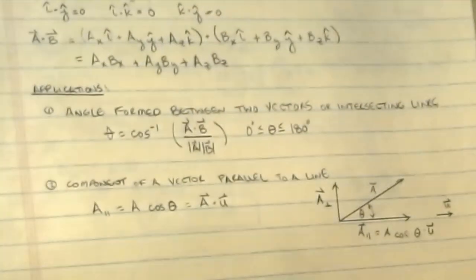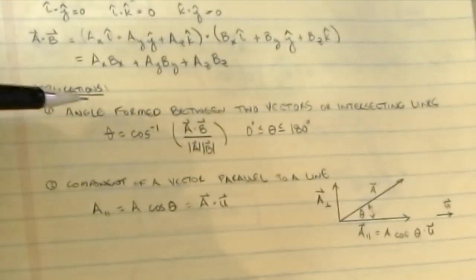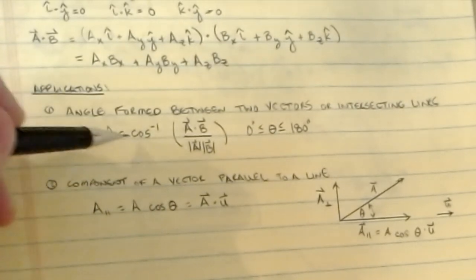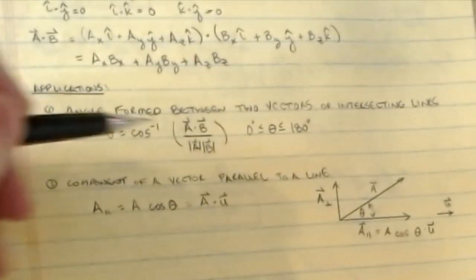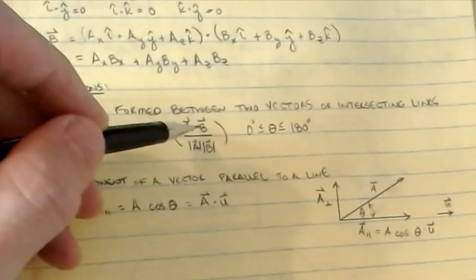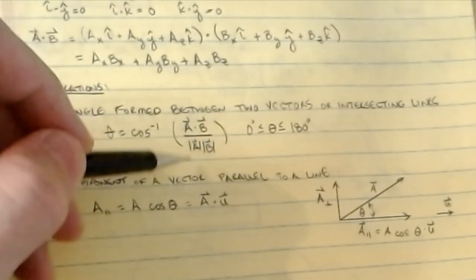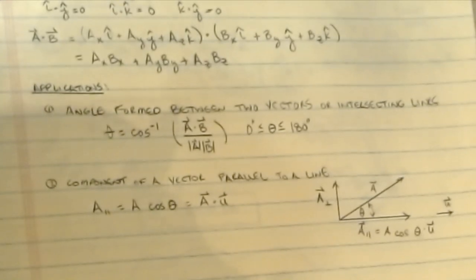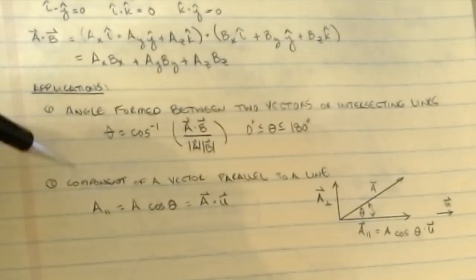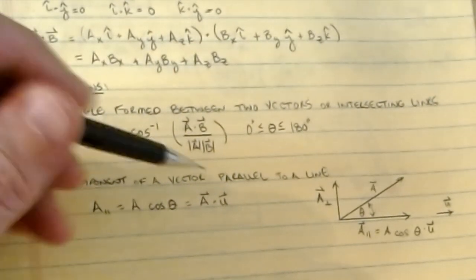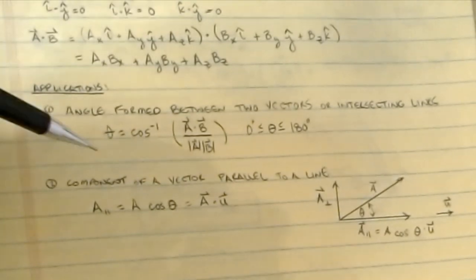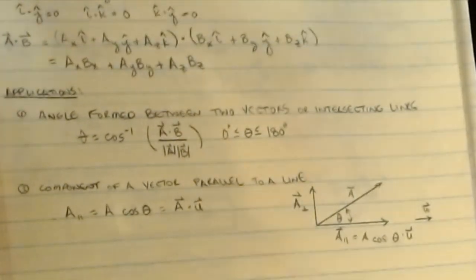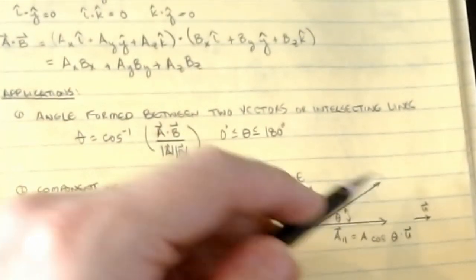Some applications of the dot product: we can find the angle between two vectors or intersecting lines by rearranging the identity to solve for theta — take the dot product of the vectors, divide by their magnitudes, then take the cosine inverse. You can also find the component of a vector parallel to a line, which is particularly handy for statics. Say I want to find a component of vector A along some direction.